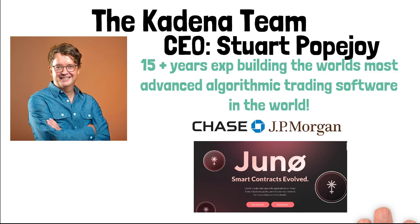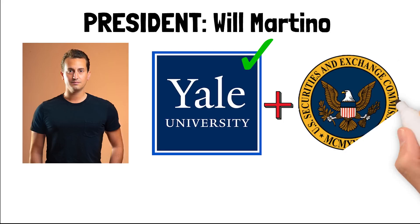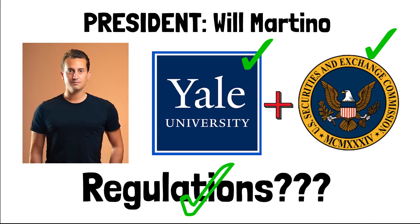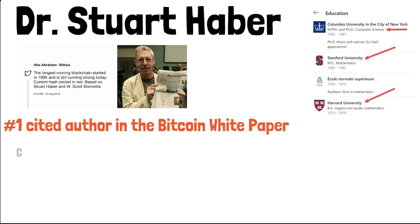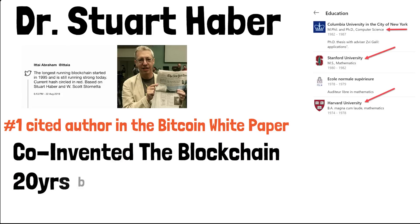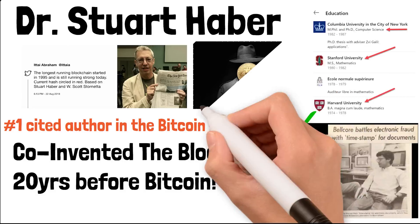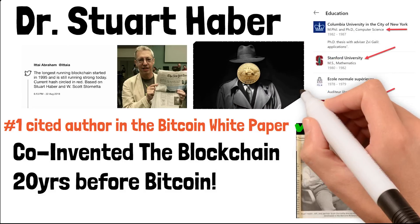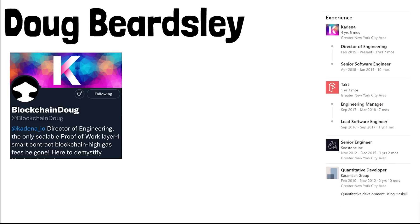Stuart Popejoy, CEO, has 15 years of experience building advanced algorithmic trading software and built JP Morgan Chase's first blockchain called Juno. Will Martino graduated from Yale top of his class, was recruited by the SEC, sent to private hacker school, and helped the SEC build their blockchain steering committee. Dr. Stuart Haber graduated with a PhD from Columbia University and is the number one cited author in the Bitcoin white paper — he also built the world's first blockchain 20 years before Bitcoin, and it's still running to this day.